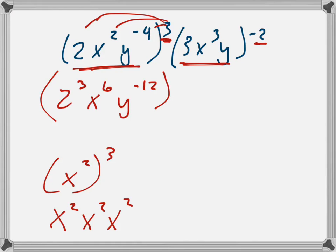So I've distributed that one, and now let's do the same thing with the negative 2. So that's 3 to the negative 2, x to the negative 6, and y to the negative 2.